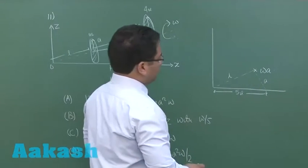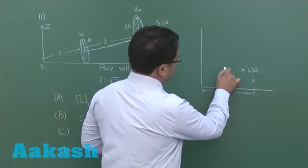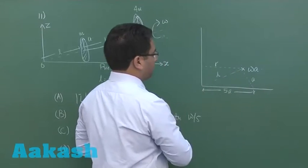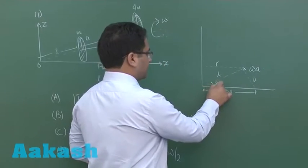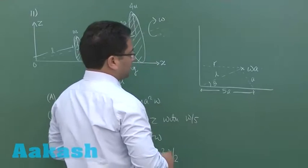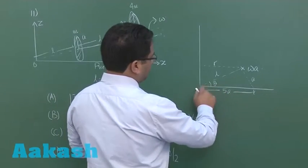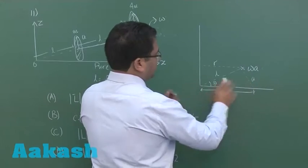Now if I concentrate on this particular part, this is the distance which is R, this angle theta, and you could see that cos theta can be very easily written as L by this.